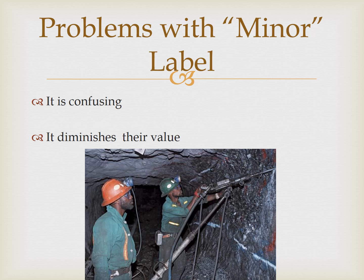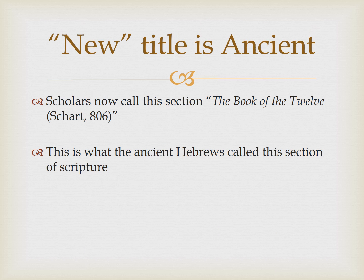This always bothered me for a couple of reasons. Number one, it's confusing. What kind of minors are we talking about? Certainly it's not the kind of miners who are working deep in the ground in South Africa, and yet it's still confusing. It makes it sound like these prophets are not as important — that they're minor in importance — and that is not at all the case. They were called minor prophets simply because they were shorter in content than the major prophets.